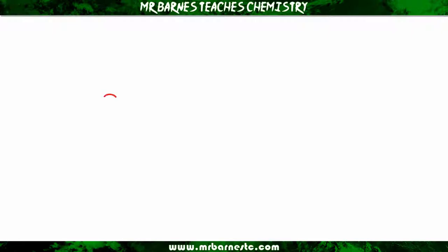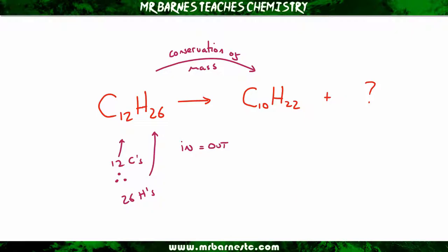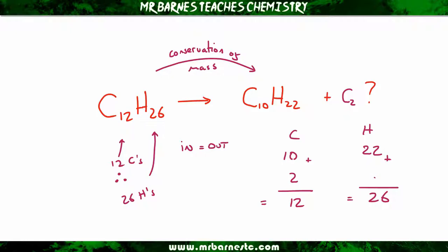The final thing for this video is you might be given the start of a symbol equation and told to finish it off. For example, I've got C12H26 here, and I'm told it's going to break down into C10H22 and something else. This is basic math — just take away the difference, that's what you've got left. I have 12 carbons and 26 hydrogens on the left, and 10 carbons and 22 hydrogens on the right. The difference between 10 and 12 is 2, so I have 2 carbons. The difference between 22 and 26 is 4, so I have 4 hydrogens — which is C2H4.